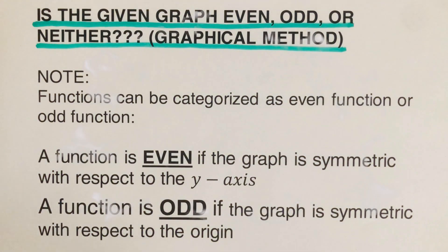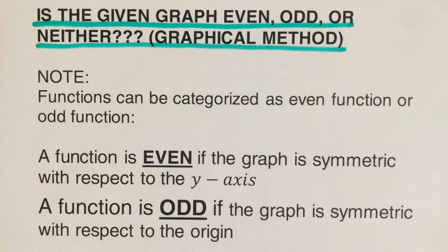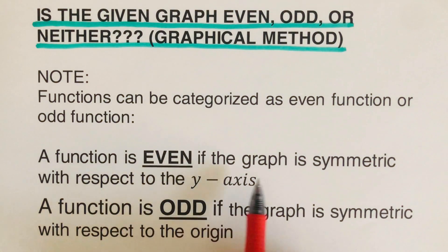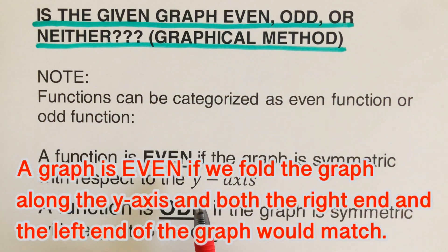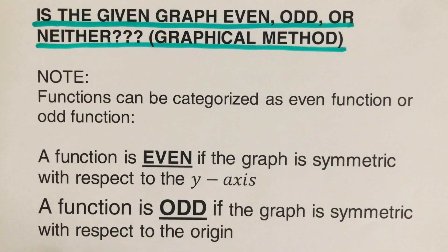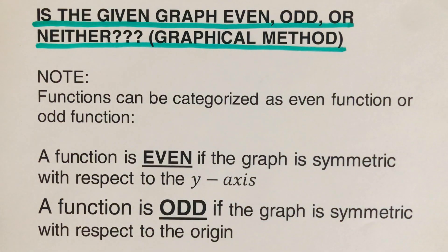In this video we're going to determine if a given graph is even, odd, or neither — the graphical method. Functions can be categorized as even or odd. A function is even if the graph is symmetric with respect to the y-axis, meaning if we fold the graph along the y-axis, both sides match. A function is odd if it is symmetric with respect to the origin — if we spin the picture upside down about the origin, the graph looks the same.